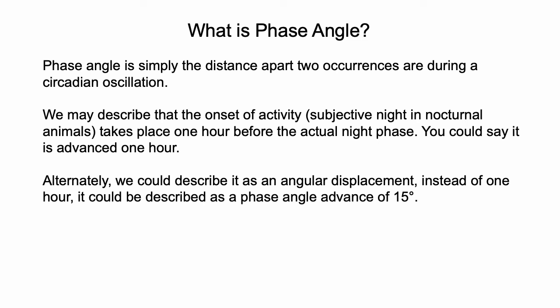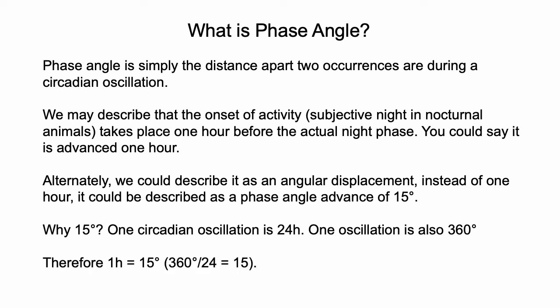Alternately, we could describe it as an angular displacement. Instead of one hour, it could be described as a phase angle advance of 15 degrees. Why 15 degrees? One circadian oscillation is 24 hours. One oscillation could also be described as 360 degrees. Therefore, one hour equals 15 degrees, because 360 divided by 24 equals 15.